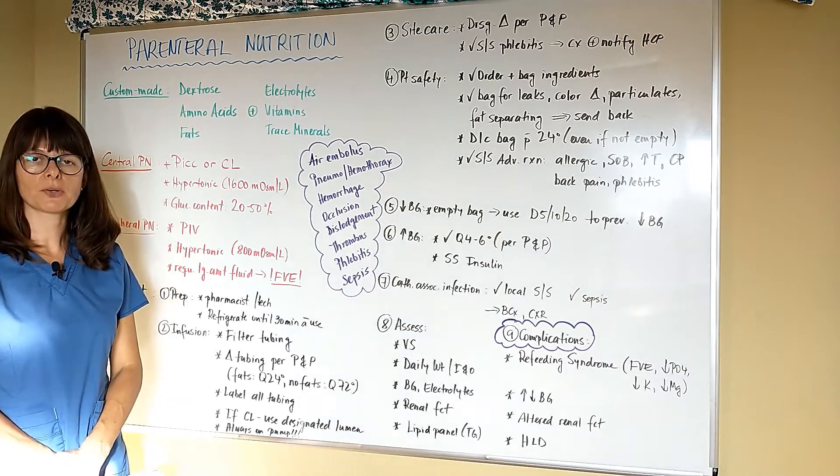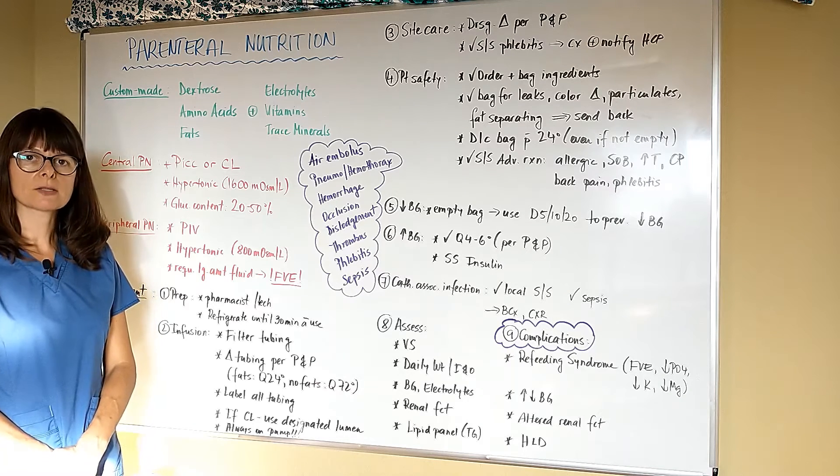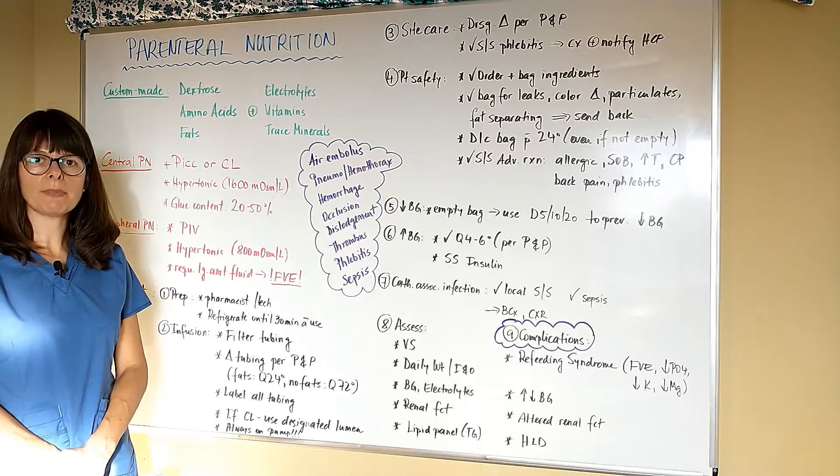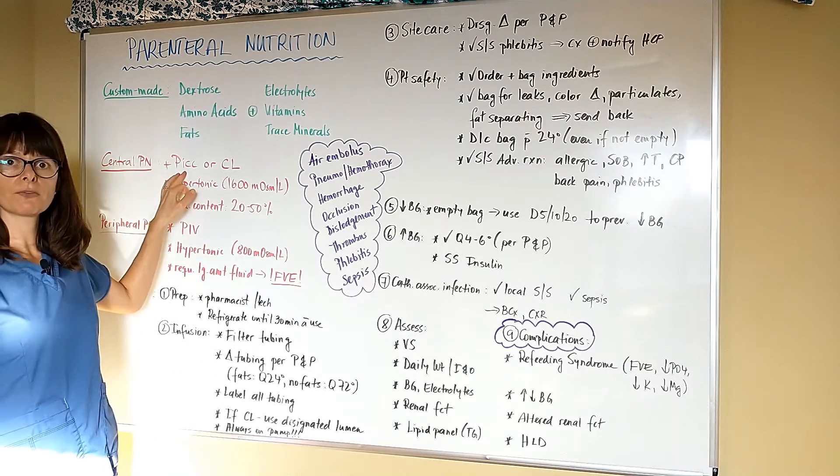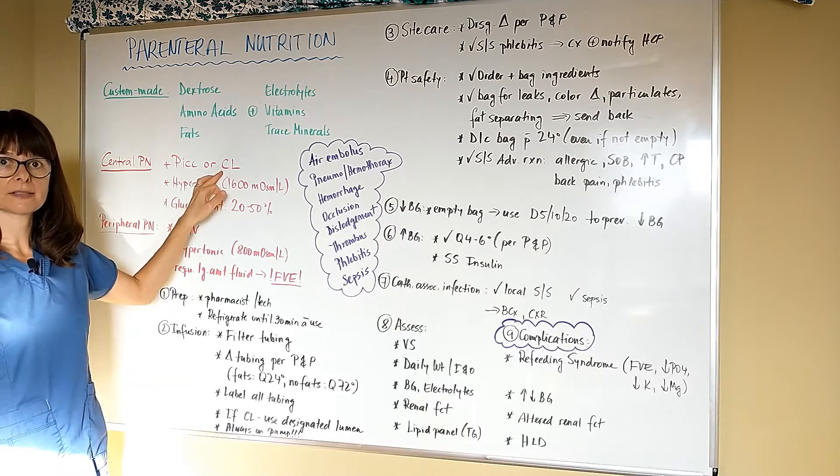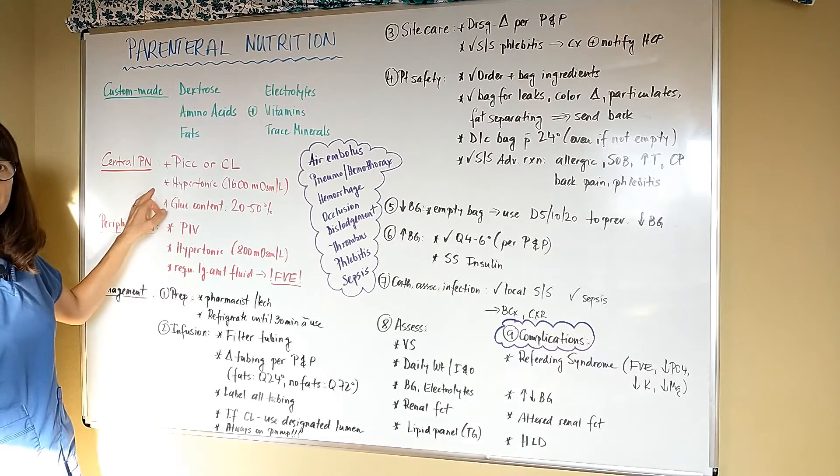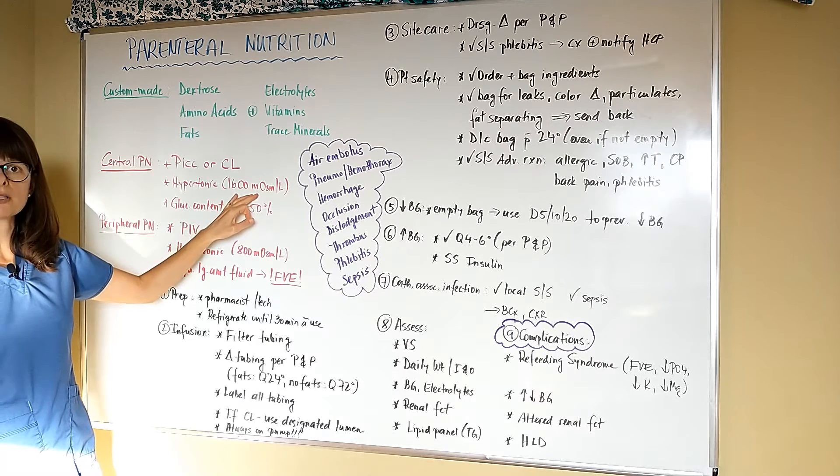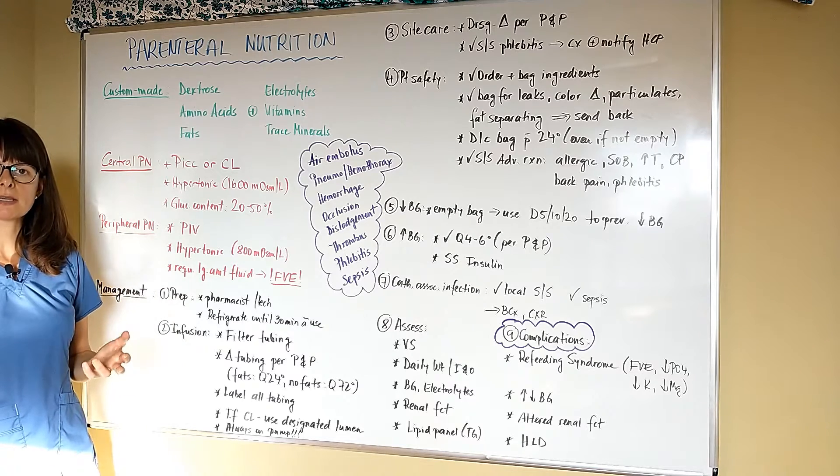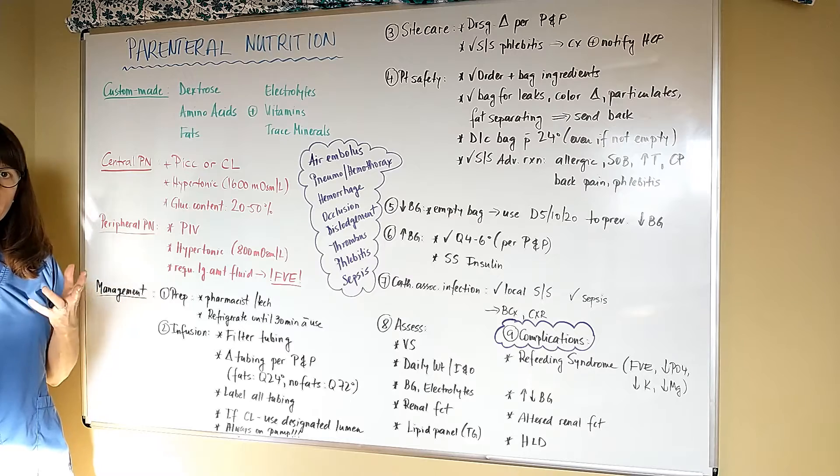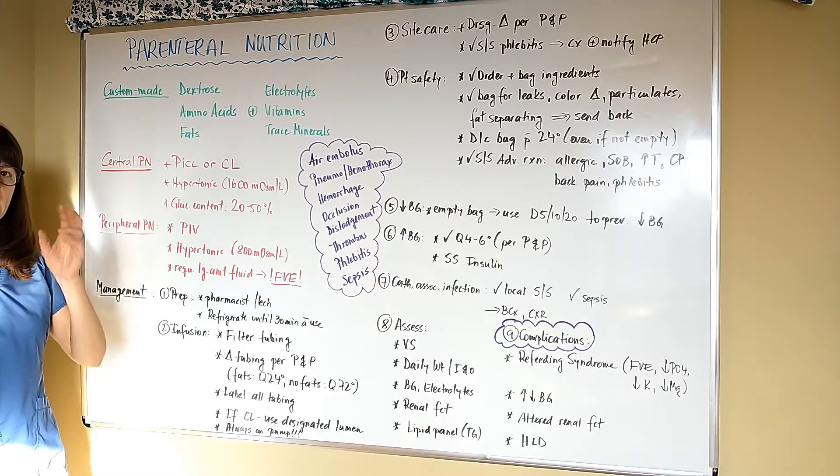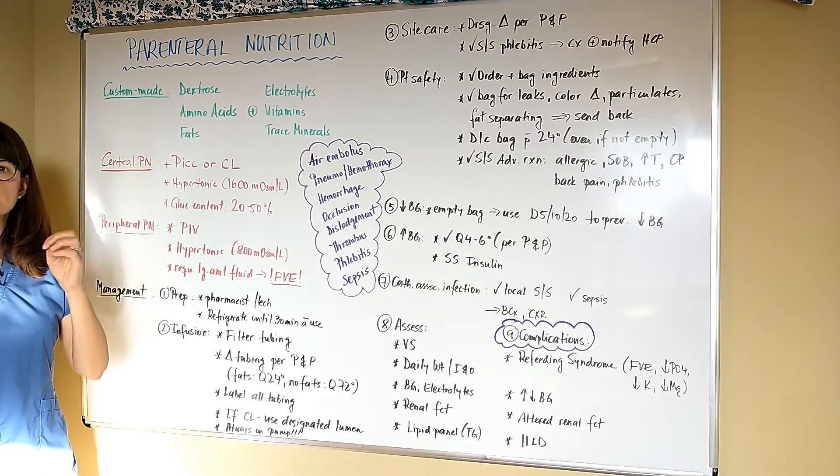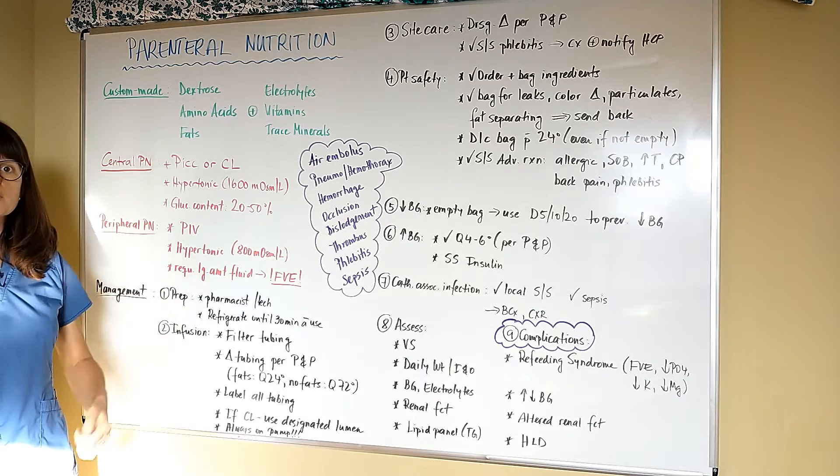One special thing about parenteral nutrition - it always has to be given, or most of the cases, through a central line. What that basically means is that it will be administered through a PICC (peripherally inserted central line) or a central line itself. The reason being is that these solutions are very extremely hypertonic - it can be up to 1600 milliosmol. If you think about our bloodstream, it typically contains about 285 to 295 osmolarity. So this is very hypertonic. If we administer it into a large blood vessel, the blood that flows through the bloodstream dilutes the solution as it enters and absorbs it a little bit better.